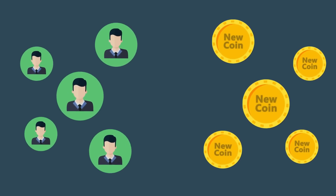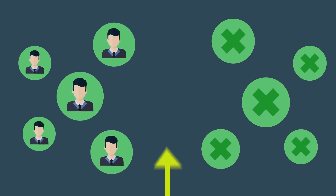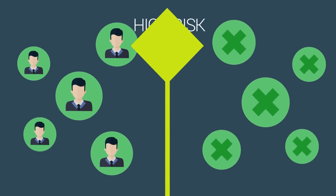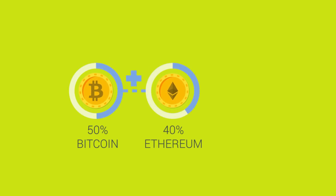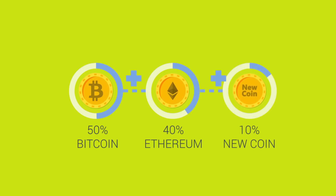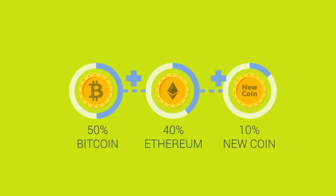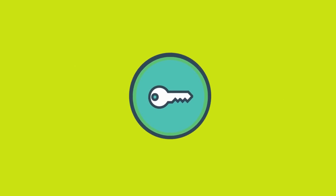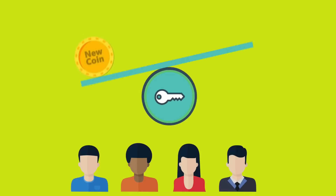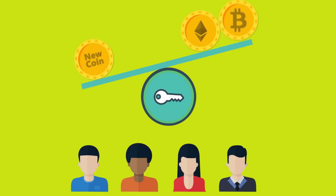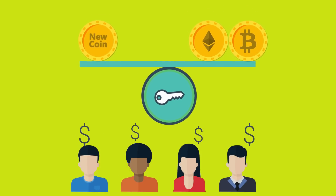For example, a trader sees that people are reluctant to invest in new coins because of the high risk involved. So he creates a product which is 50% Bitcoin, plus 40% Ethereum, and 10% NuCoin. He calls this product TraderProd. Now, people look at TraderProd and see they can hedge their risk on NuCoin with Bitcoin and Ethereum. Hence, they invest in TraderProd.